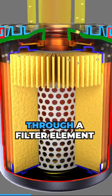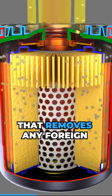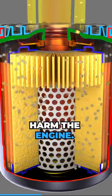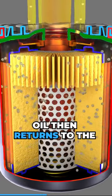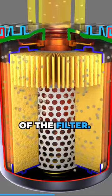The oil then passes through a filter element that removes any foreign particles that could harm the engine. Oil then returns to the engine through the large center hole at the top of the filter.